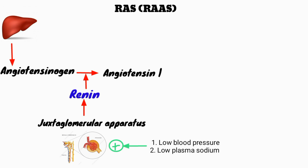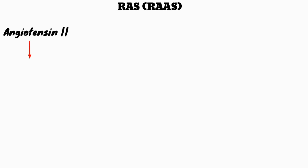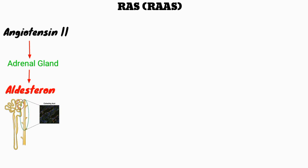Angiotensin 1 gets converted into angiotensin 2, and this happens by an enzyme called angiotensin converting enzyme, or ACE, which is secreted by our lungs. Angiotensin 2 acts on the adrenal gland and releases aldosterone, which is a steroid hormone. This then acts on the collecting duct of the nephron to promote water retention, so our body retains more water.